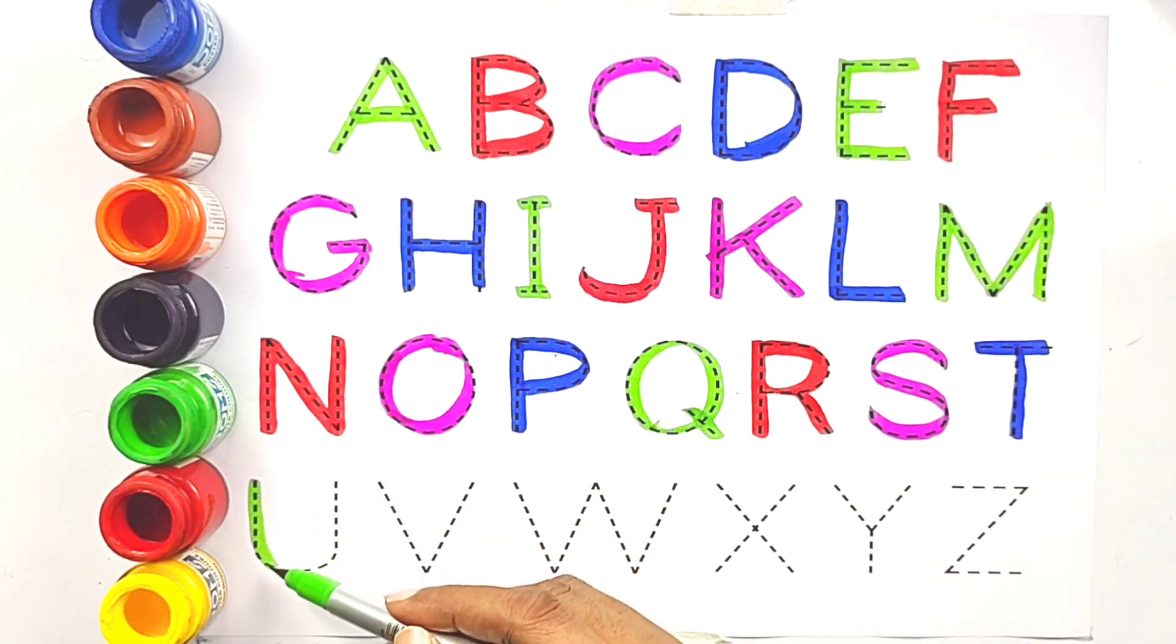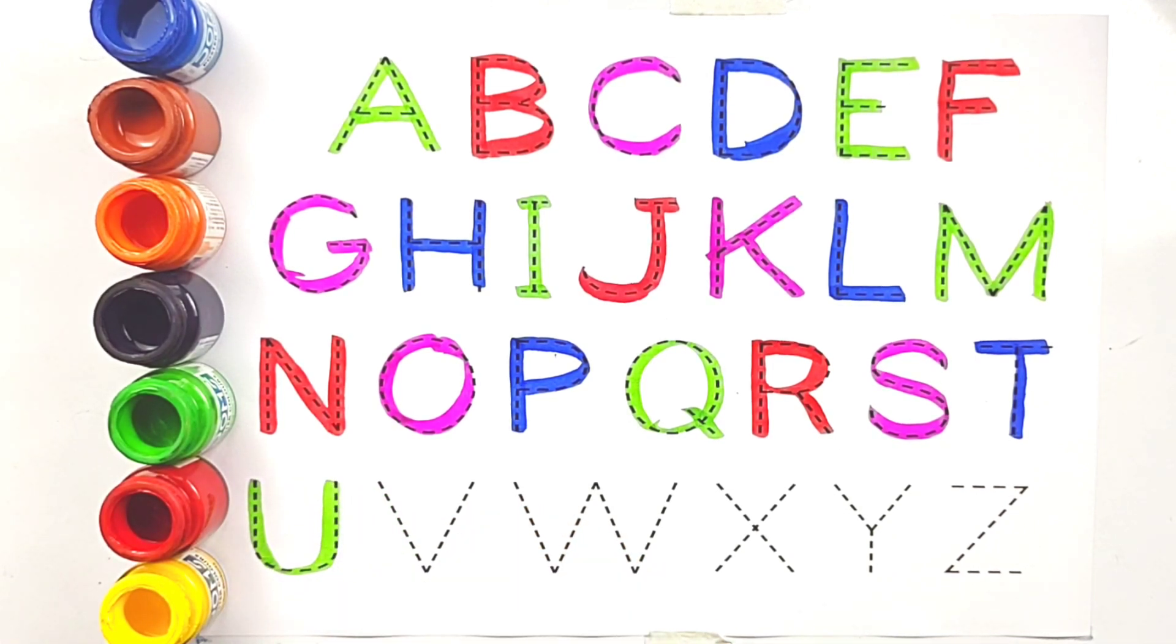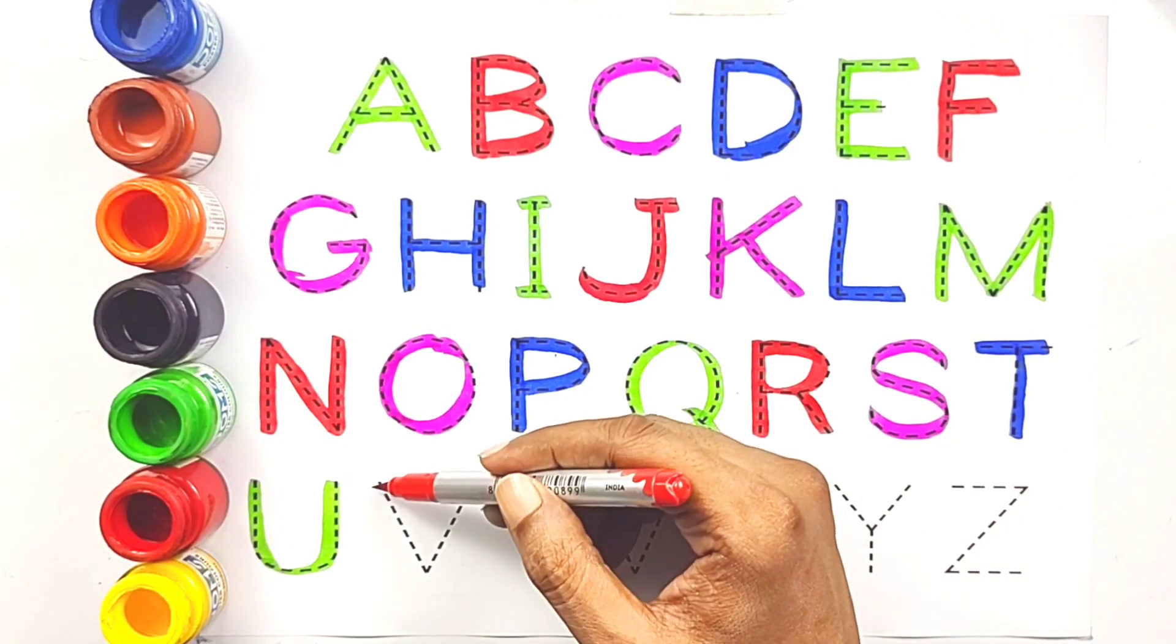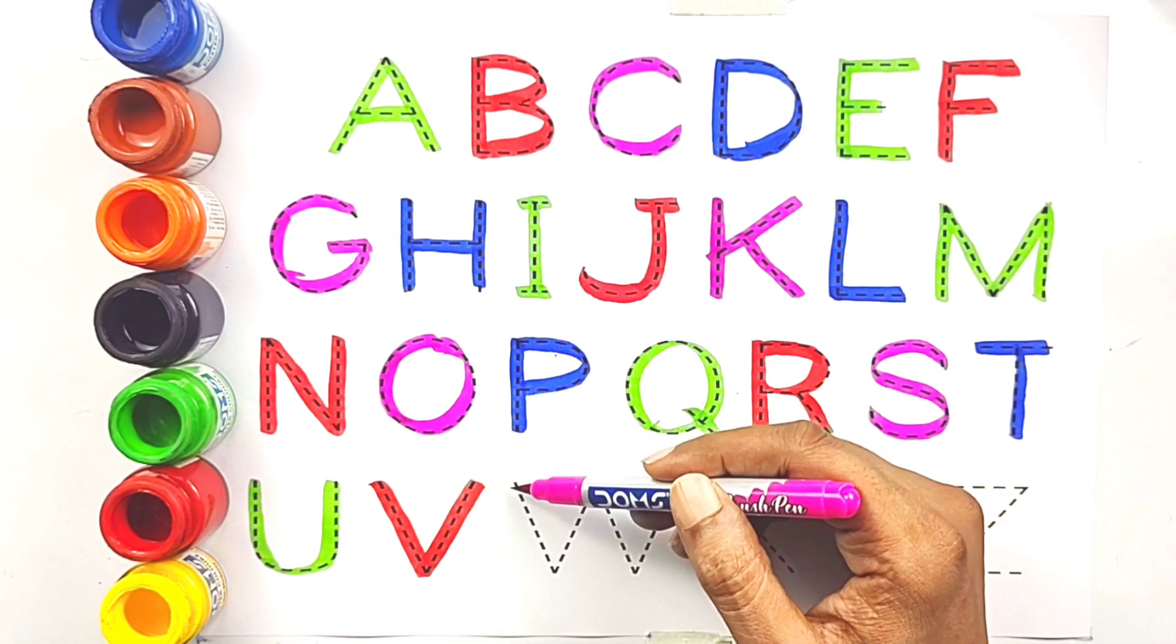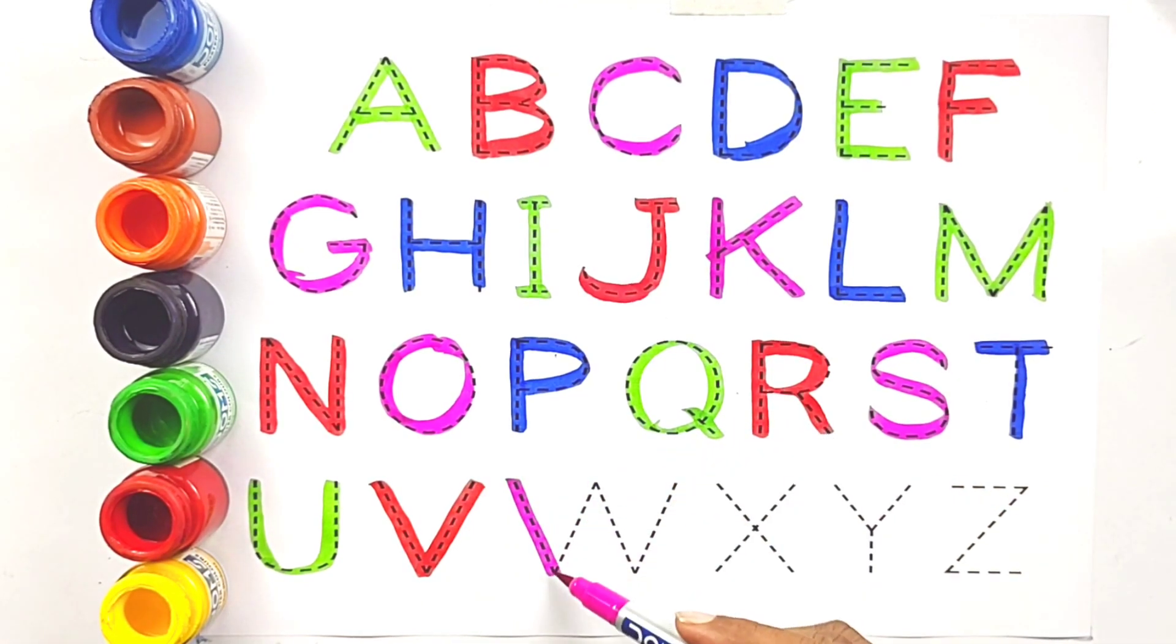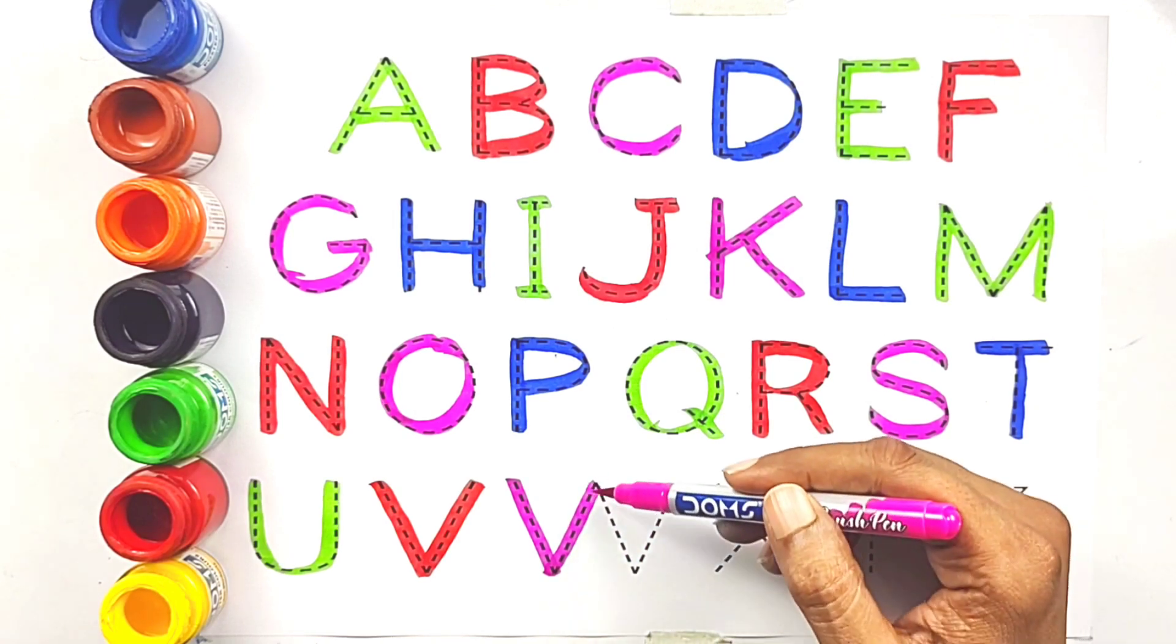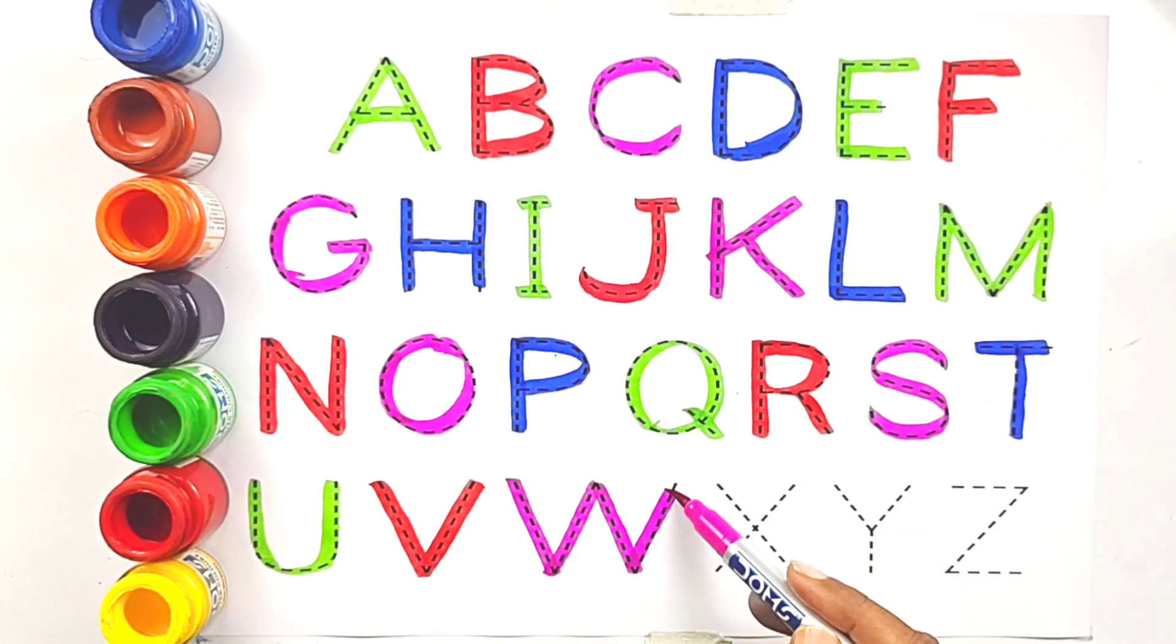Blue color. U, U for umbrella, U for umbrella. Red color. V, V for violin, V for violin. Magenta color. W, W for wall, W for wall.